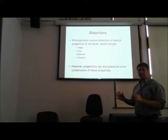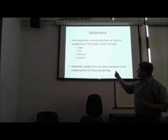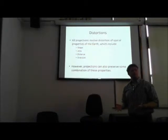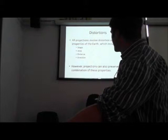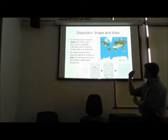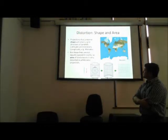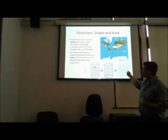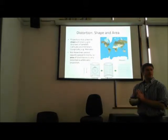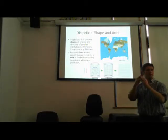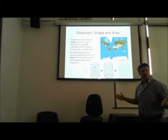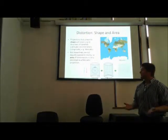Different projections can preserve each one of these to varying degrees, sometimes more than one. But it's impossible to preserve all of them at once, and for some of them it's even impossible to preserve accuracy for all areas on the map. Looking at the two properties of shape and area, we'll first look at the Mercator map again. Projections that preserve shape retain that grid structure of parallels and meridians, like Mercator, but these lines are not really equally spaced in reality. For instance, at the poles all the meridians would come together and could be very close — even in the same spot when you get to the pole. Yet here they're equally spaced apart, so you get huge distortions in area, in the size of the land masses.